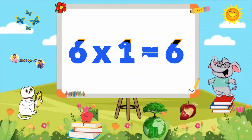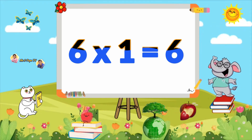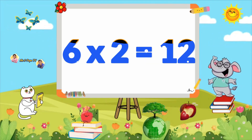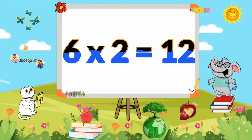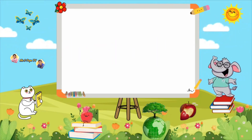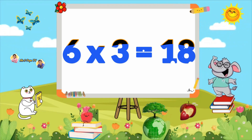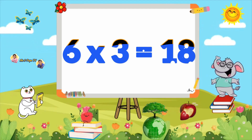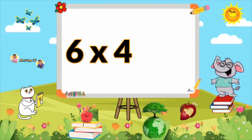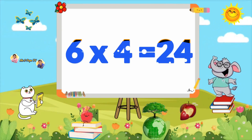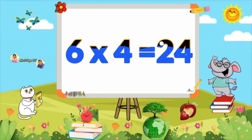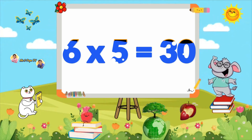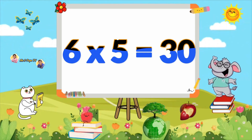Learn Table of 6. 6×1=6, 6×2=12, 6×3=18, 6×4=24, 6×5=30.